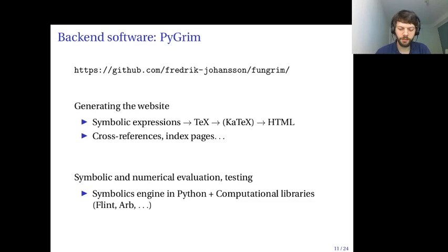The backend for the library, for the database, is a Python library called Pygrim. You can find it on GitHub. It's basically used to generate the website, so I take the symbolic expressions, I convert that to TeX, and then I use KaTeX to generate HTML. And it also generates cross-references and the topic pages and everything else needed for the website.